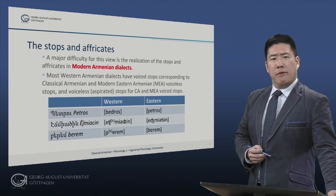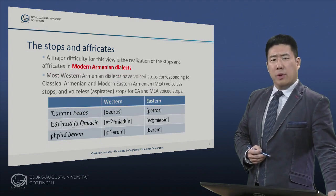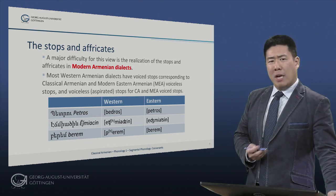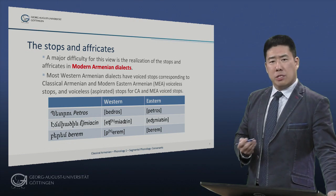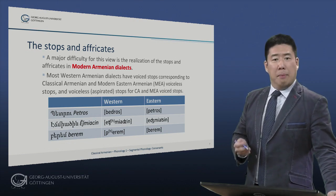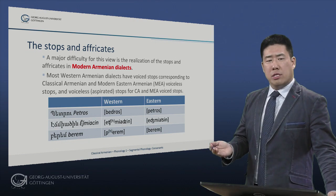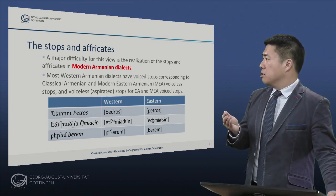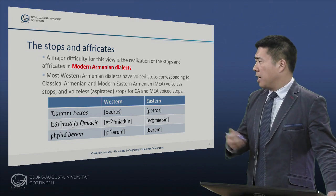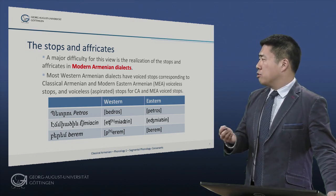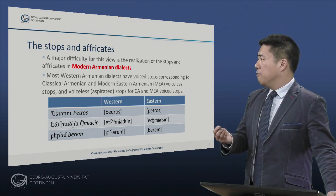One major difficulty for this view is the realization of the stops and affricates in modern Armenian dialects. Most Western Armenian dialects have voiced stops corresponding to Classical Armenian and modern Eastern Armenian voiceless stops. Conversely, they show voiceless aspirated stops in many cases for Classical Armenian and Middle Eastern Armenian voiced stops.